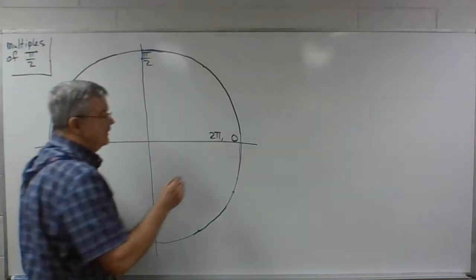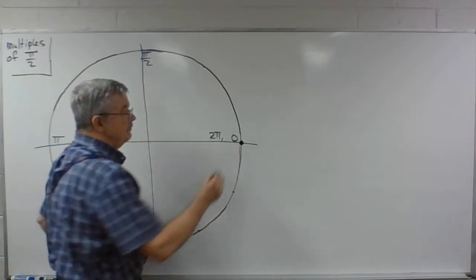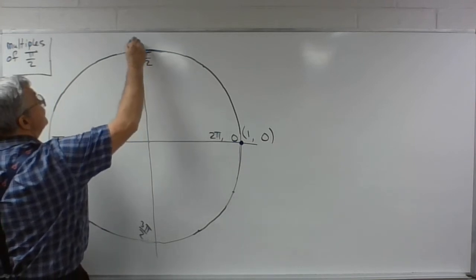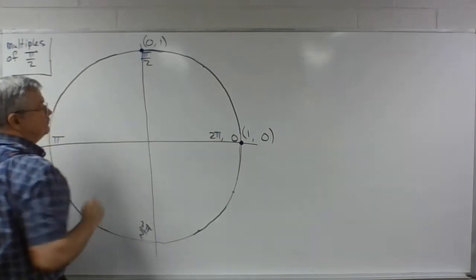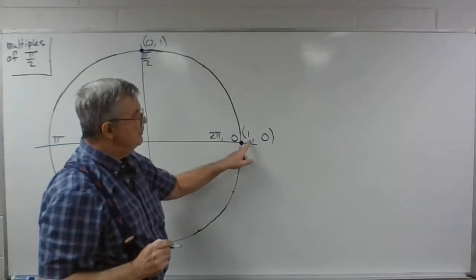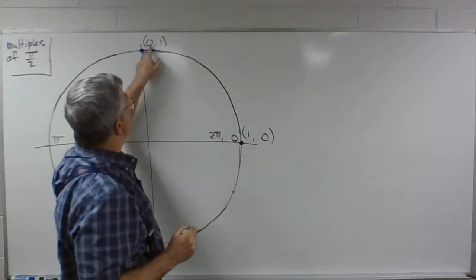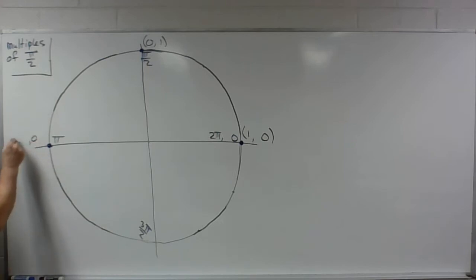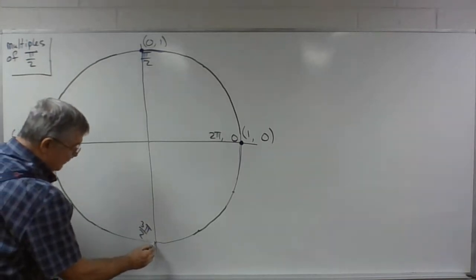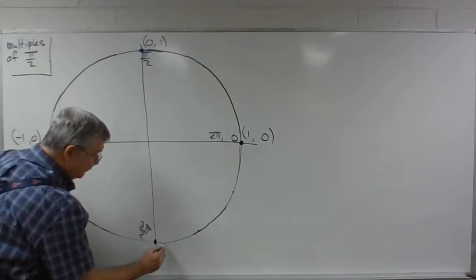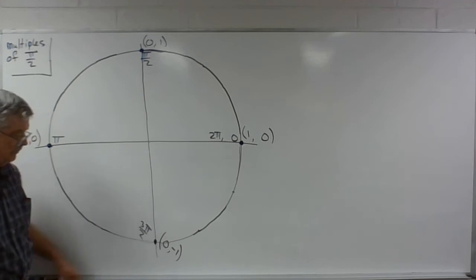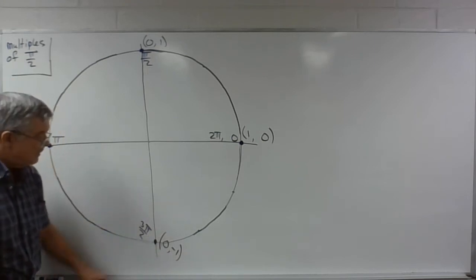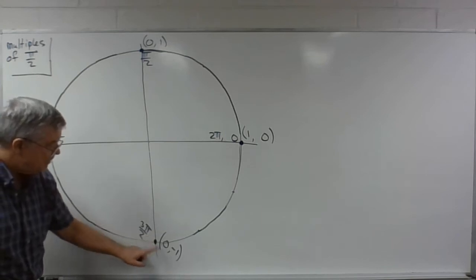The sines and cosines are easy to figure out. At angle 0, we're on the x-axis, so y is 0 and x is 1. At pi over 2 we're on the y-axis, so x is 0 and y is 1 — the x-coordinate is cosine, y-coordinate is sine. At pi we're on the x-axis again: y is 0, x is negative 1. At 3 pi over 2 we're on the y-axis: x is 0, y is negative 1. So cosine of 3 pi over 2 is 0 and sine of 3 pi over 2 is negative 1.